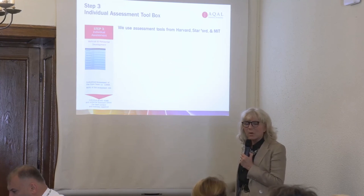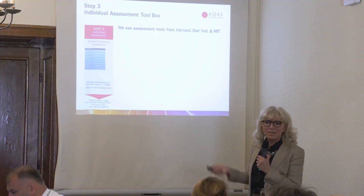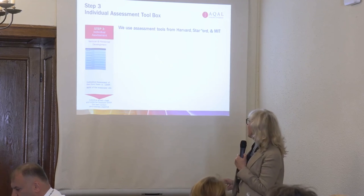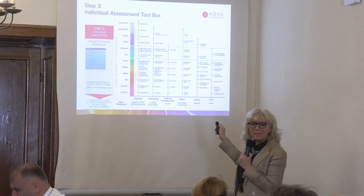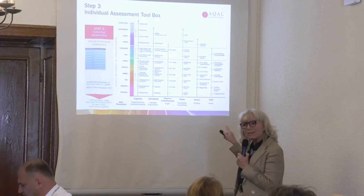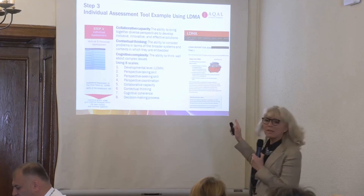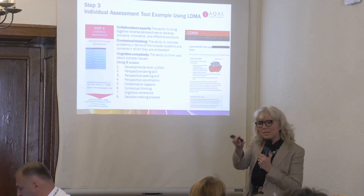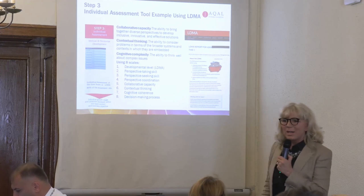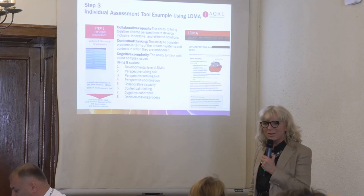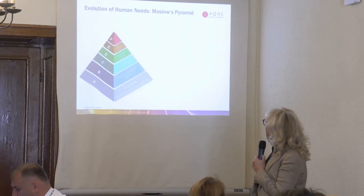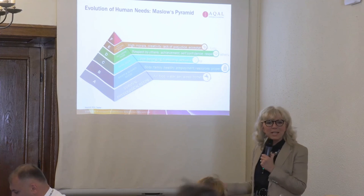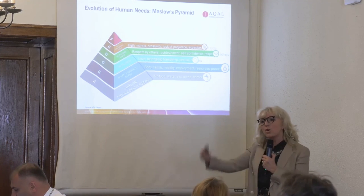Step three is the individual assessment. I got a PhD in psychology because I wanted to know how people evolve — how do we reach the tip of the Maslow pyramid? There are many lines of development, many intelligences along which we evolve. We use the Harvard development model, the LDMA, and also the sentence completion test. We apply Suzanne Cook-Greuter's model as well. What we are looking for is people who are evolved and will keep their promises, because there are many egocentric people who tell you a great deal but don't mean it.